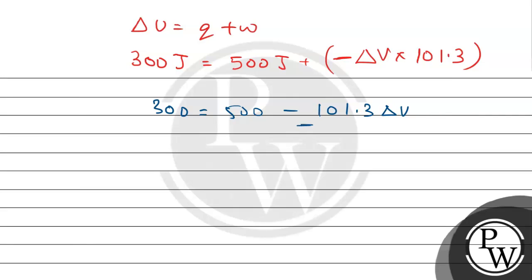So, if we take the negative term to left hand side, it will become positive. And 500 minus 300 will be subtracted. After subtracting, it will be 200. And delta V will equal 200 divided by 101.3. So, delta V when we divide, we will get it as 1.97 litre.